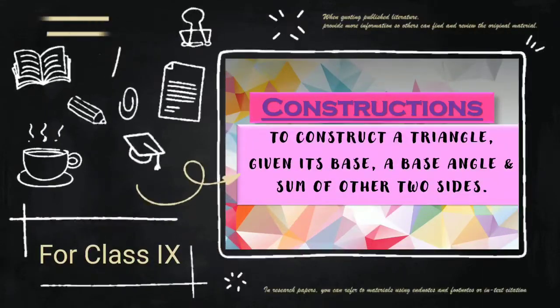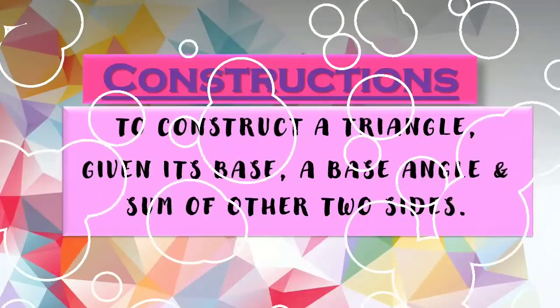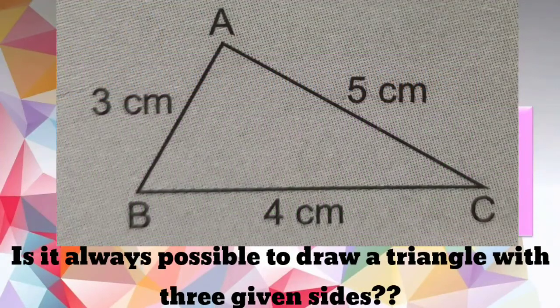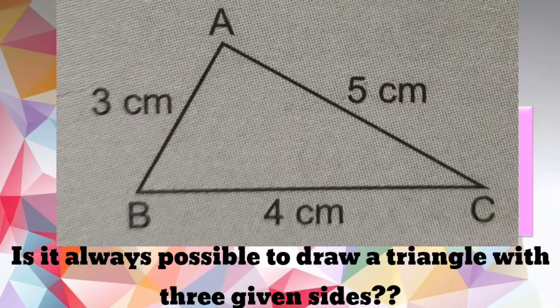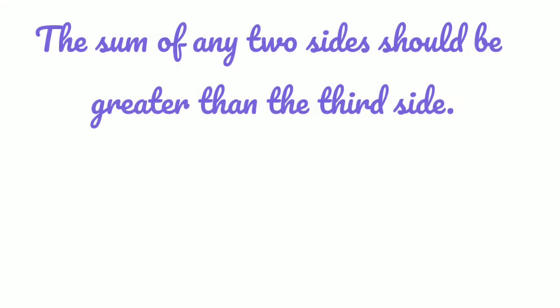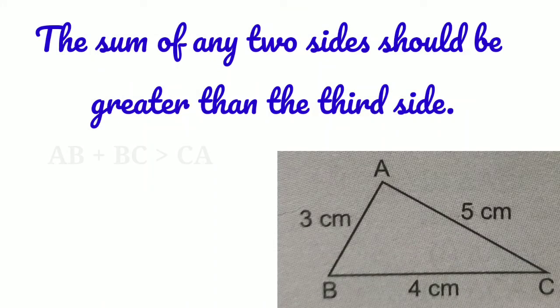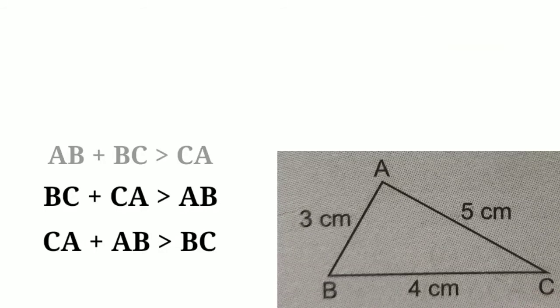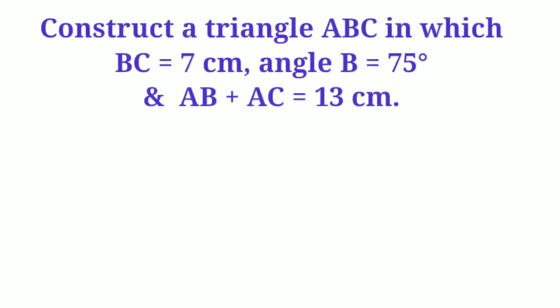Hello, my dear children. Today in constructions we are going to learn how to construct a triangle when its base, a base angle, and sum of other two sides are given. Before constructing a triangle, we should always check whether the given triangle is possible or not. For that, we should see the sum of any two sides should be greater than the third side. As shown in the example, let's start our construction.